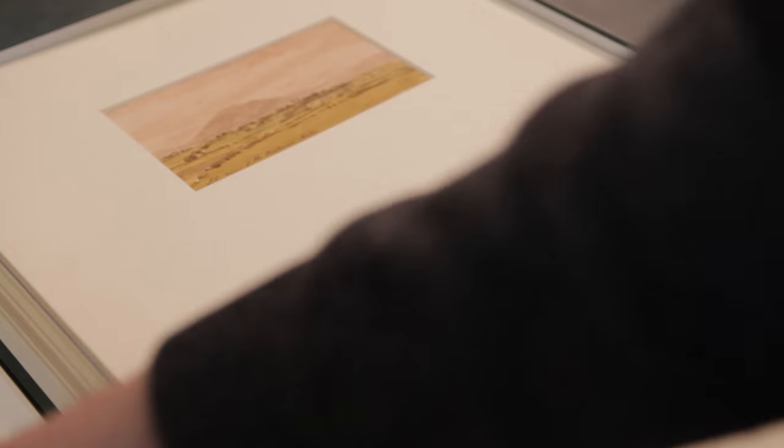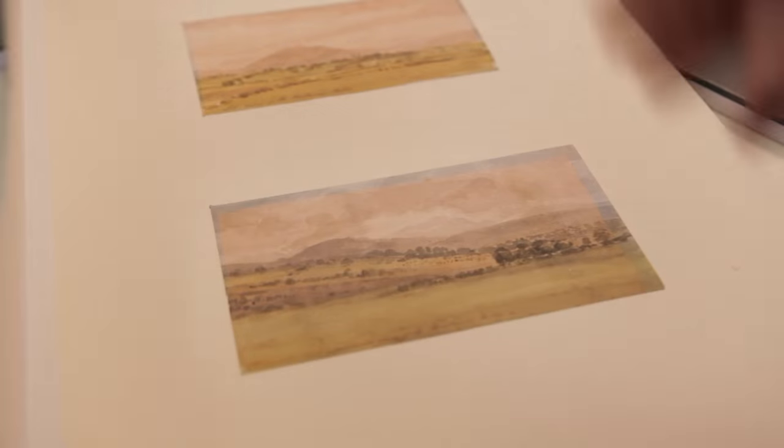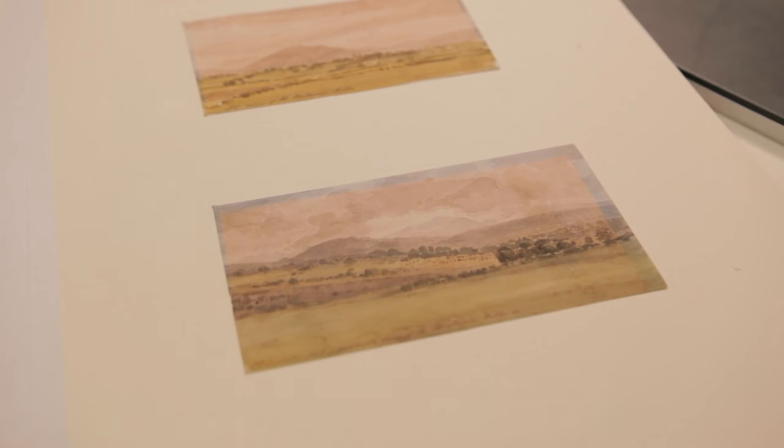There are numerous examples in the box showing similar types of deterioration where blues have turned to mauves and where greens have almost bleached out totally.